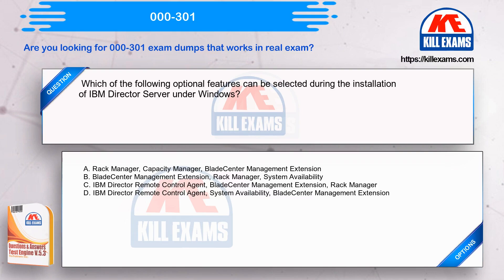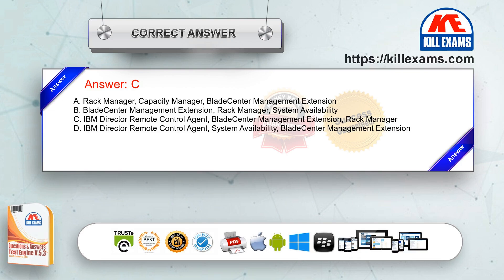Which of the following optional features can be selected during the installation of IBM Director Server under Windows? Option A: Rack Manager, Capacity Manager, BladeCenter Management Extension. Option B: BladeCenter Management Extension, Rack Manager, System Availability. Option C: IBM Director Remote Control Agent, BladeCenter Management Extension, Rack Manager. Option D: IBM Director Remote Control Agent, System Availability, BladeCenter Management Extension. The correct answer is Option C.